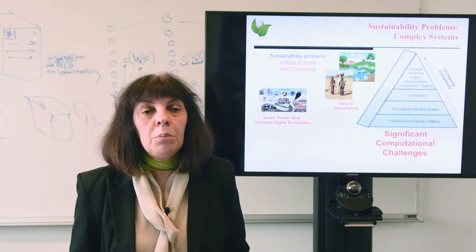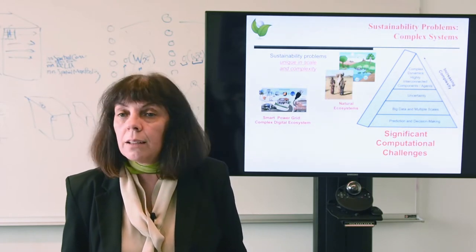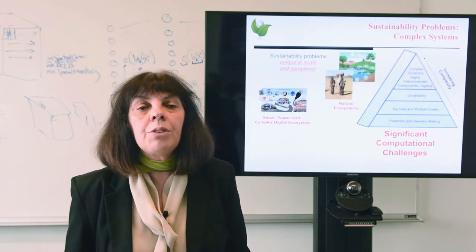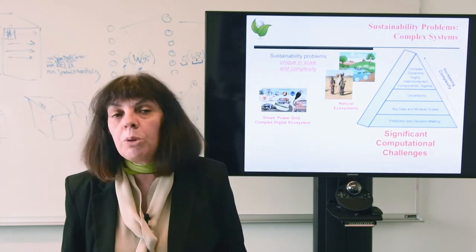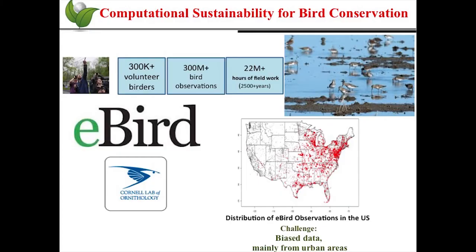Yet sustainability problems are unique in scale and complexity, often involving significant computational challenges. Here is an example of a computational sustainability approach for bird conservation. eBird is a citizen science program with over 300,000 volunteer birders who have submitted over 300 million bird observations, corresponding to more than 2,500 years of field work.